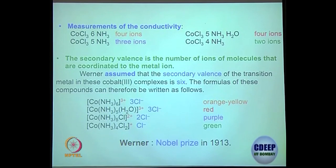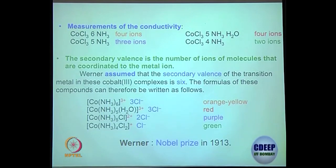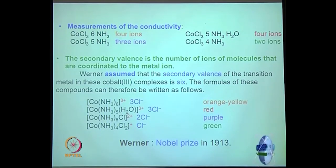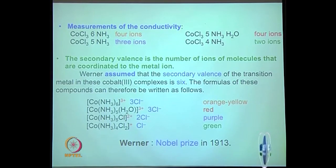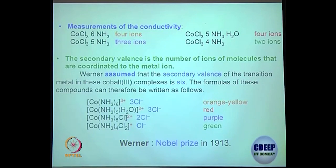That is the first coordination sphere; whatever is left outside is accessible. The ones bound to the metal complex are not accessible. So when you see 3 chlorides but only 1 is accessible, 2 chlorides are bound to the metal center. This was a revolutionary thought when almost nothing was known — Werner deservedly received the Nobel Prize in 1913. Looking back now, everything falls into place: all those conductivity studies, all those silver nitrate precipitation experiments are explained by this theory.